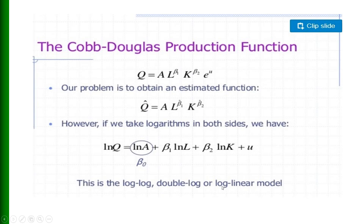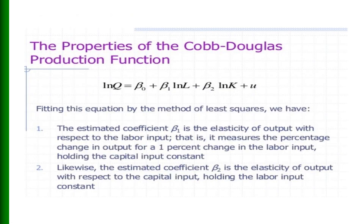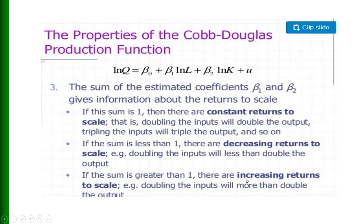There are some properties of the Cobb-Douglas production function. First, the estimated coefficient β₁ is the elasticity of output with respect to the labor input — it measures the percentage change in output for a one percent change in labor, holding capital constant. Similarly, β₂ is the elasticity of output with respect to the capital input, holding labor constant. The sum of β₁ and β₂ gives information about returns to scale: if β₁ + β₂ = 1, we have constant returns to scale — doubling inputs doubles output, tripling inputs triples output.